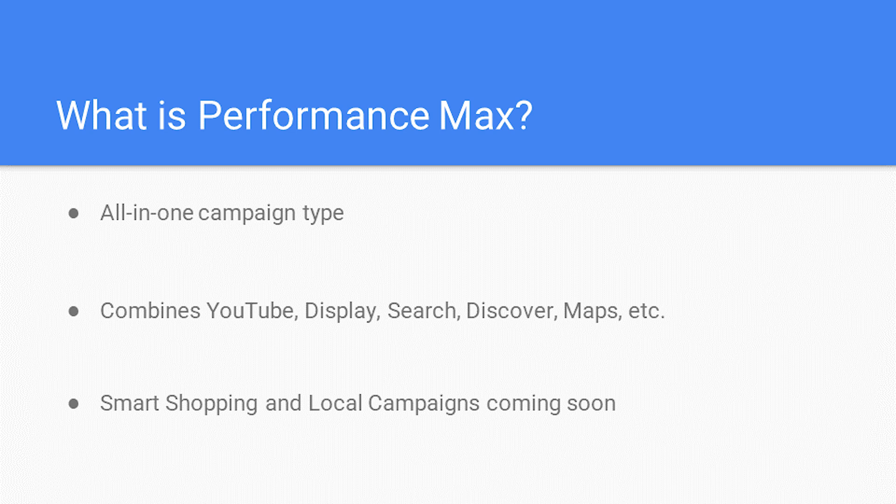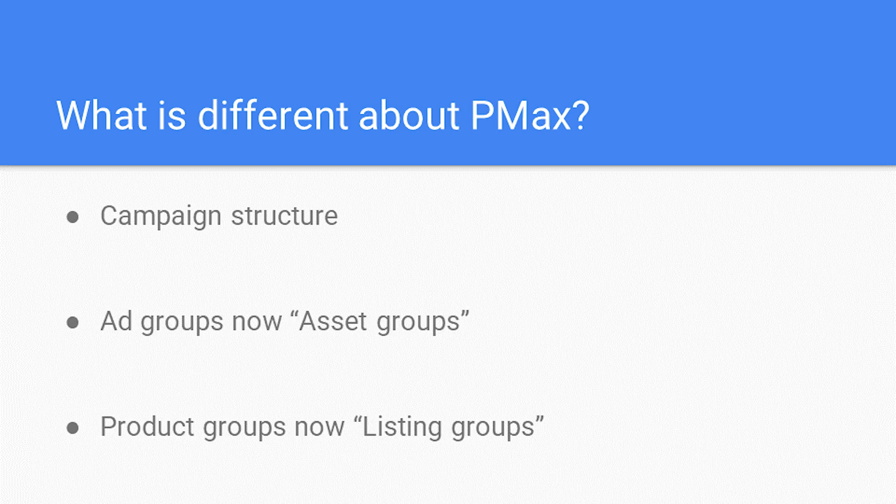So what is so different about Pmax? It all comes down to the campaign structure. Most notably, ad groups are now known as asset groups, and product groups are now known as listing groups. And unlike smart shopping, Performance Max can also be used for e-commerce and for lead generation.